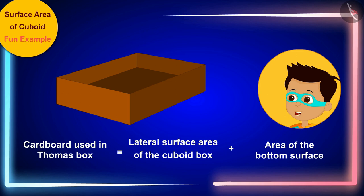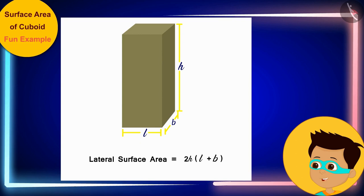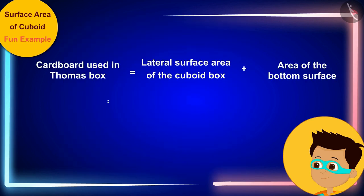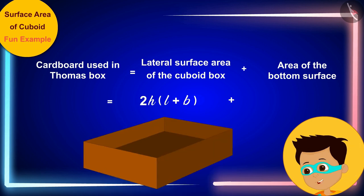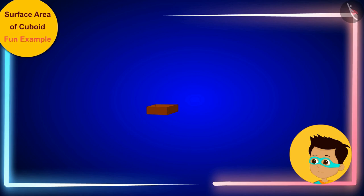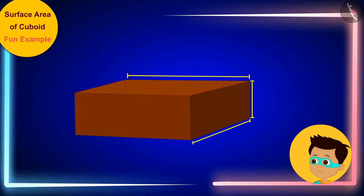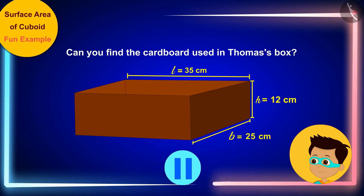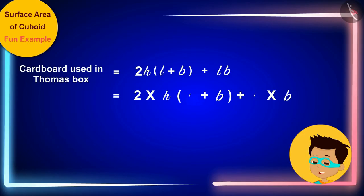Thomas explains that the total cardboard used equals the lateral surface area of the cuboid plus the area of the base. The lateral surface area formula is taken from the formula book, and the area of the bottom surface equals length times width, written as L × B. With length 25 cm, width 25 cm, and height 12 cm, the class is invited to try solving it themselves.